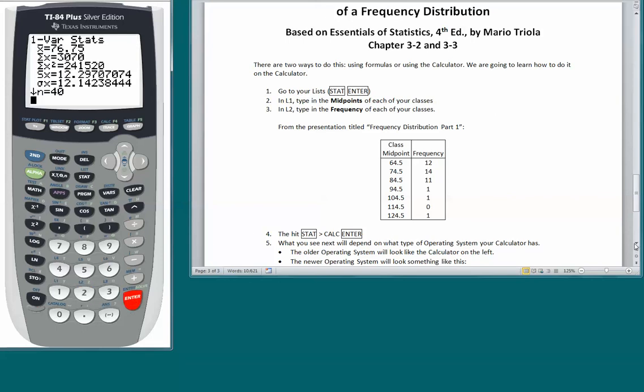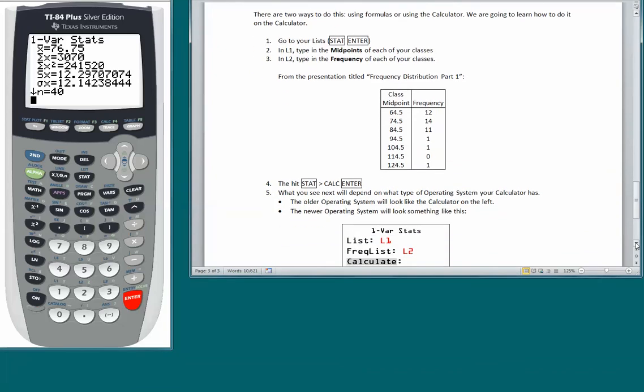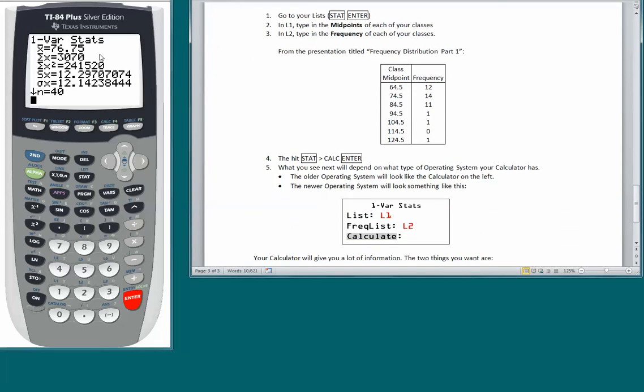Now, if you have one of the newer calculators, when you hit that STAT, CALC, ENTER, your screen is going to look something like this. It's going to say 1-var Stats in little letters at the top, and then you will see List, Freq List, and Calculate.